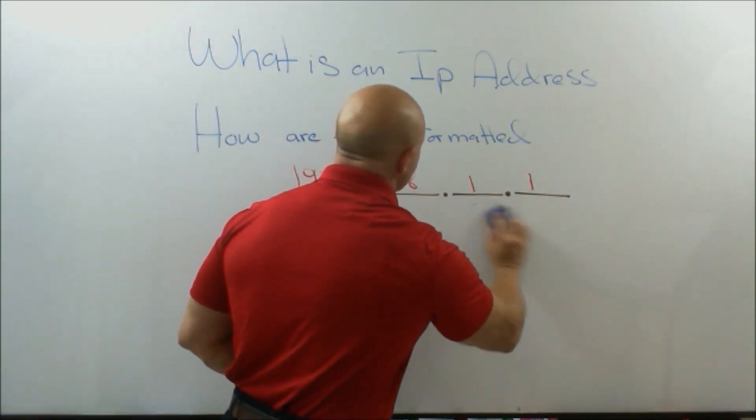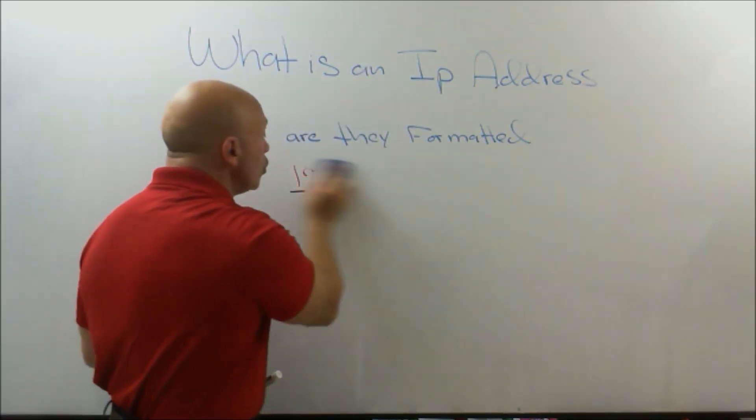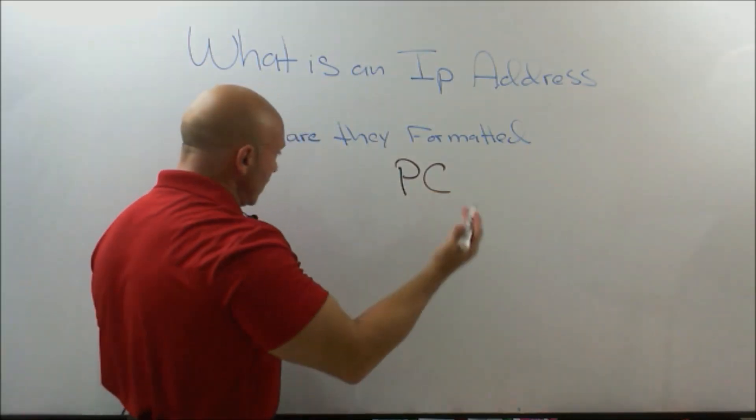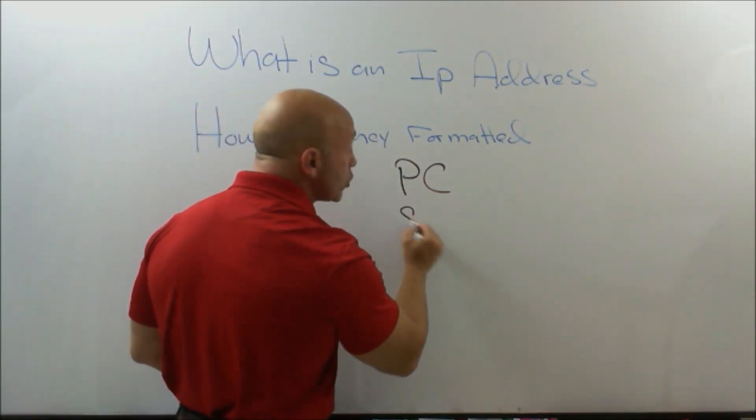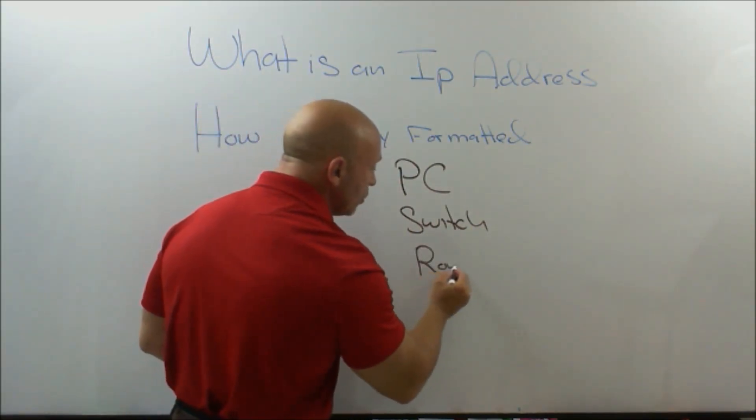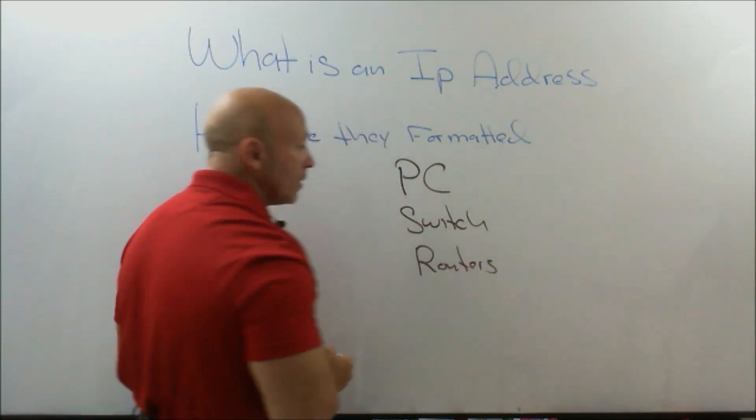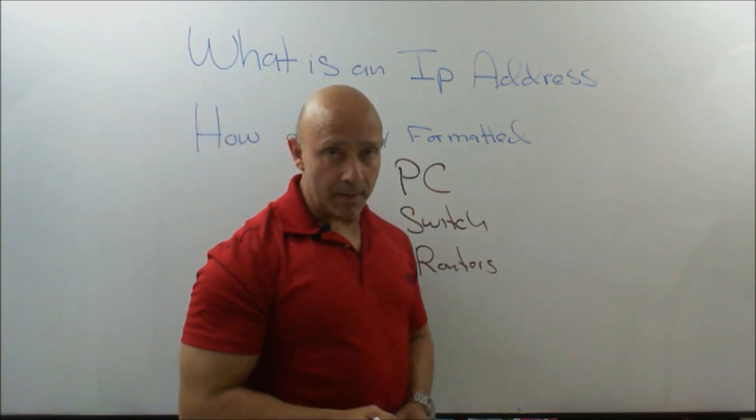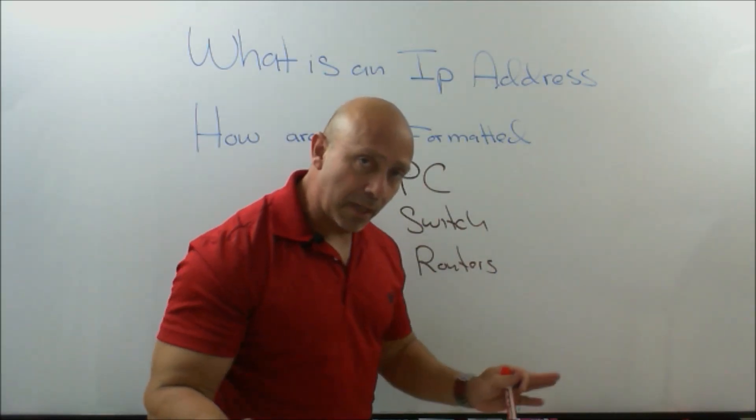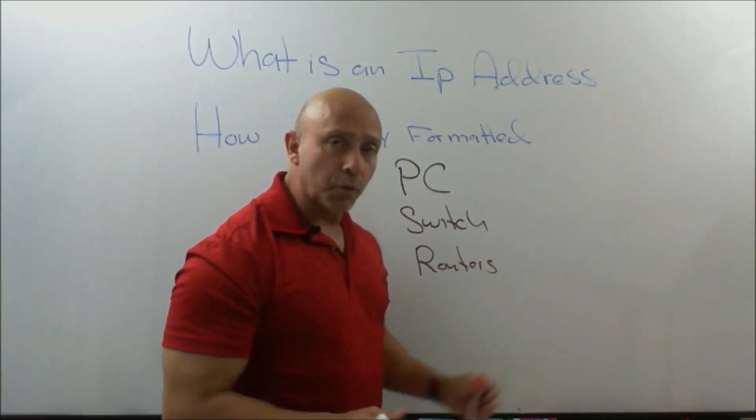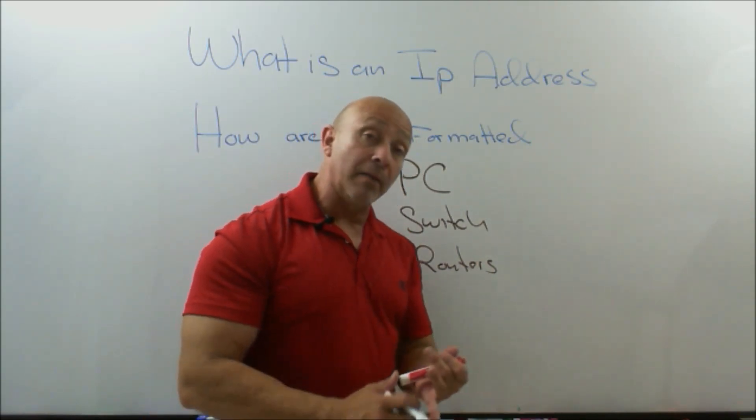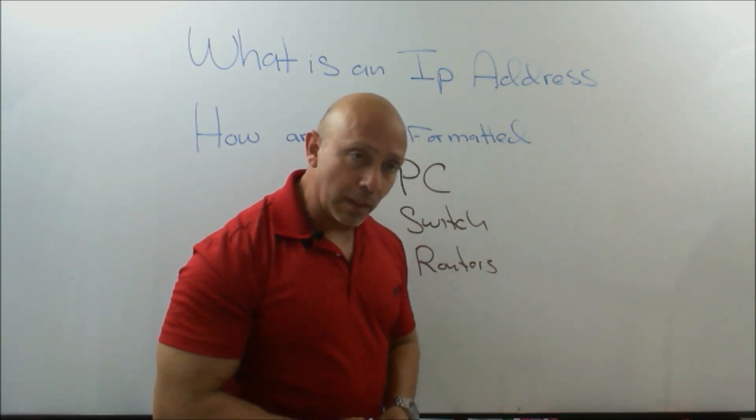Now, IP addresses, again, are assigned to whatever. You can assign an IP address to a PC. You can assign an IP address to a switch. You're going to assign IP addresses to routers. You're going to assign multiple IP addresses to PCs. You can assign multiple IP addresses to switches, depending on the type of switch you have. And the same thing goes for routers because routers, you can put them on the interface, or you can do sub-interfaces if you're creating VLANs or you're doing frame relay.